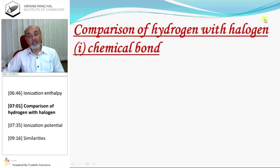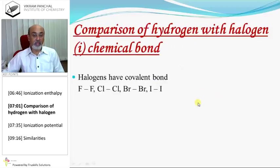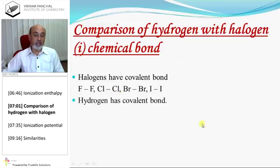Comparison of hydrogen with halogens. Halogens have covalent bonds — fluorine (F2), chlorine (Cl2), bromine (Br2), iodine (I2). Similarly, hydrogen also has a covalent bond.